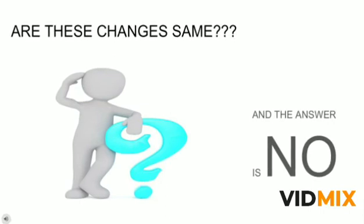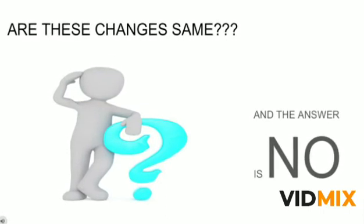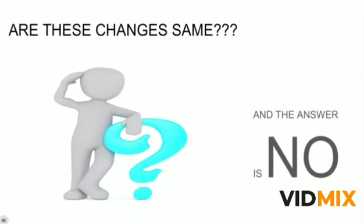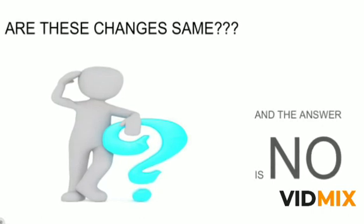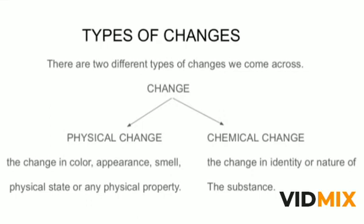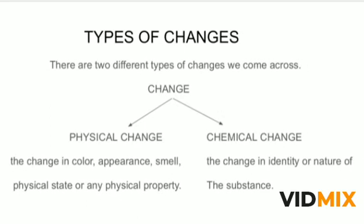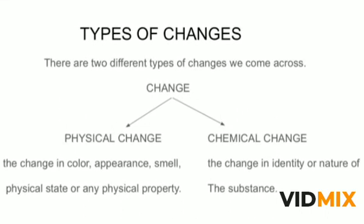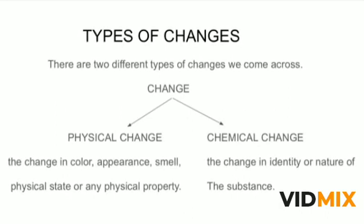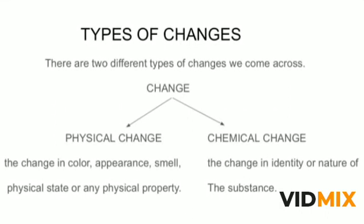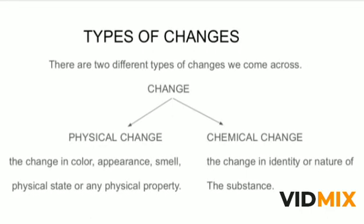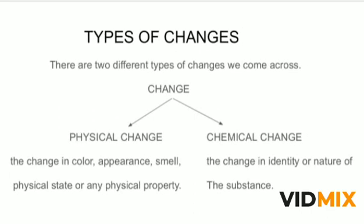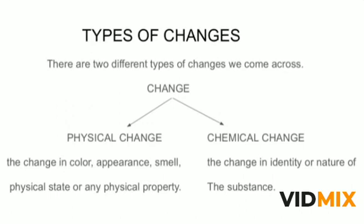So I have a question: are all these changes the same? Definitely the answer is no — all changes are not the same. So what are the different types of changes? Changes can be classified into two types: physical change and chemical change. In physical change, there will always be a change in color, appearance, smell, physical state, or any physical property. But in chemical change, the change will be in the identity of that particular substance.